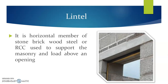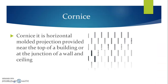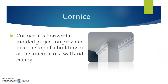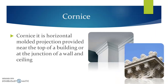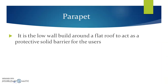Lintel. A lintel is a horizontal member made up of either stone, brick, wood, steel, or more commonly RCC. These are used to support the masonry and load above an opening. Cornice. A cornice is a horizontal moulded projection provided near the top of a building or at the junction of wall and ceiling. These are used to improve upon the elegance of a building, either internally or externally.